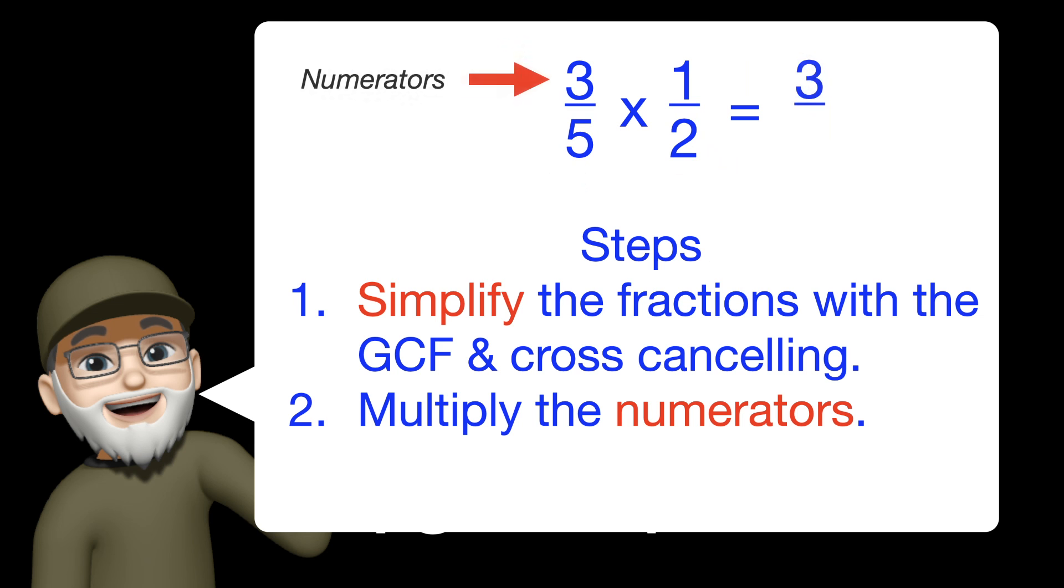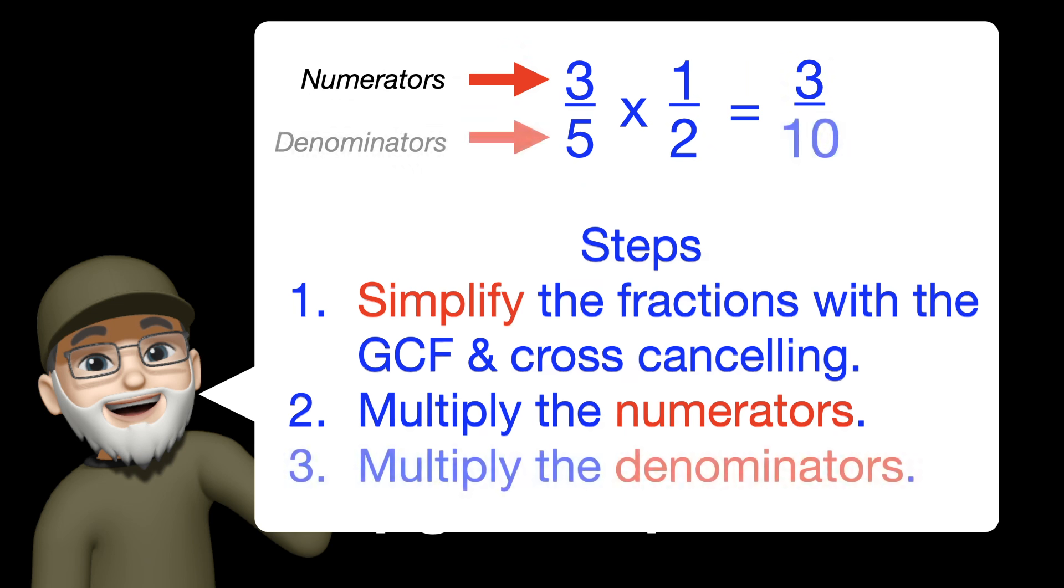Then you multiply the numerators on the top. Last, multiply the denominators on the bottom.